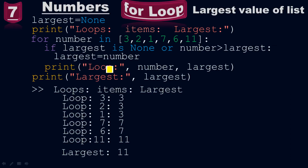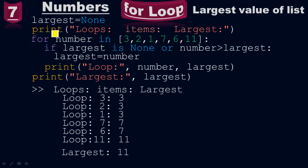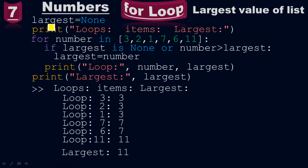Then take a print of 'loop:', number, largest. Again, take the print of 'largest:', largest. When you look at the output, the first line is because of this print function — print of 'loop: items: largest:'. Look, initially we set largest equals to none. It is not known.